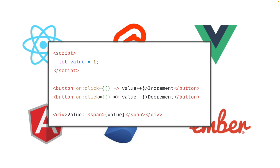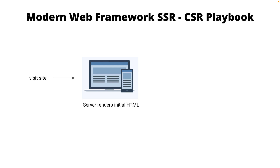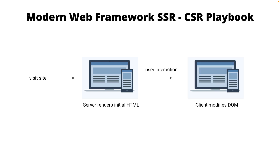Since we've written our applications using modern web frameworks, instead of rewriting another set of server-side code, modern frameworks started to support server-side rendering — enabling us to reuse the same piece of code to render on both server and client. The modern web framework playbook is: when you visit a site, the first initial load is served through server-side rendering, and as you start to interact with the site, the DOM and content are modified through client-side rendering. In front-end lingo, this is called initial render on the server side and continuing on the client side.